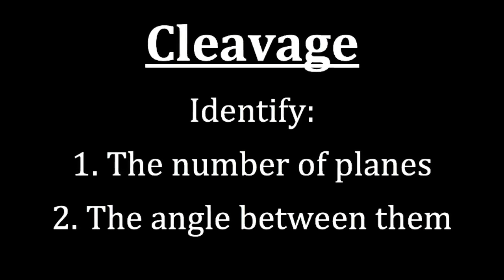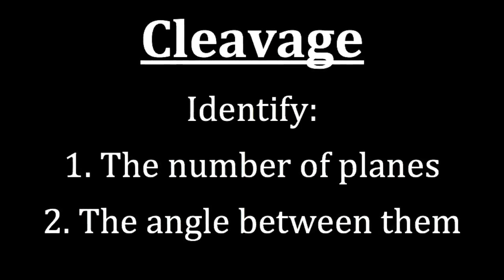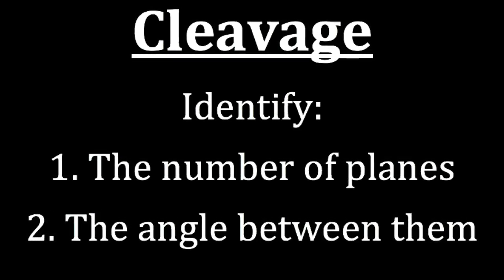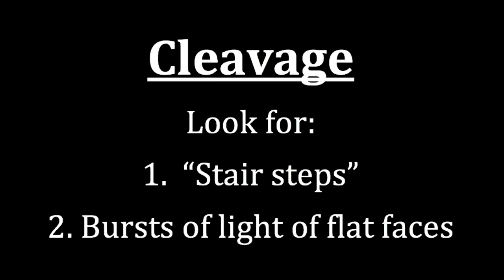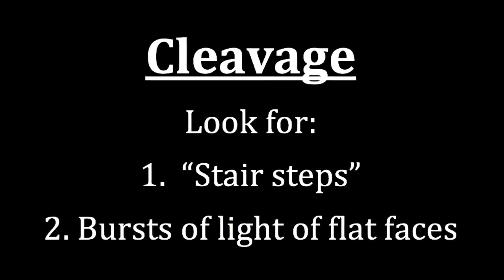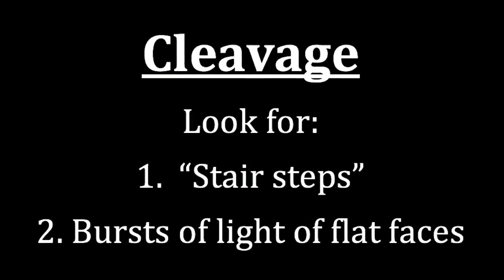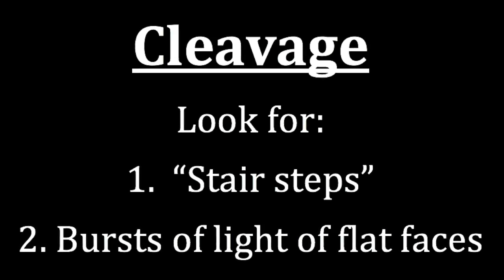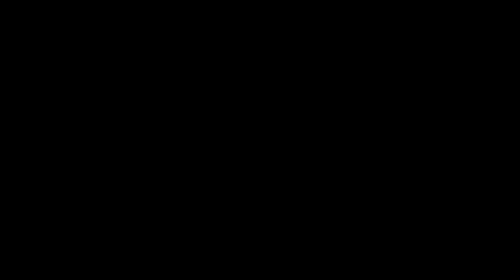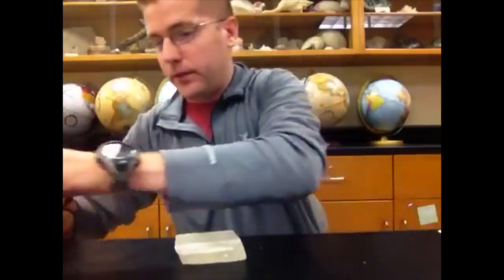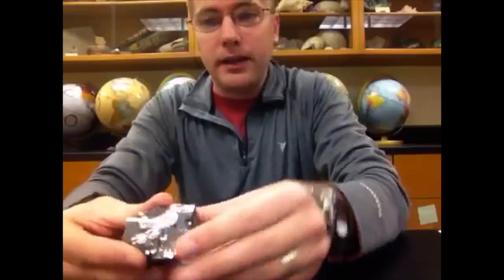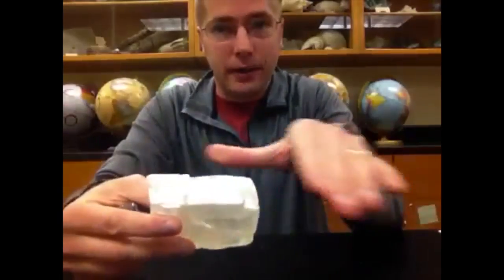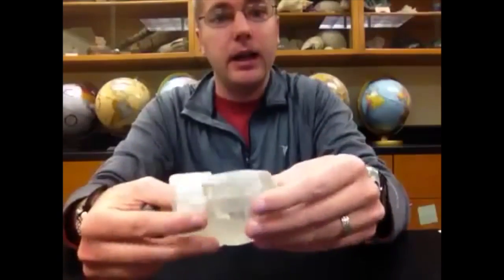What we're going to look for when we're identifying cleavage is two things: identifying the number of planes and the angle between them. To identify the number of planes, we look at a sample that has cleavage. The first thing to look for is called stair steps — they're not actual stair steps, but that's what they look like. The second thing we're going to look for are bursts of light off flat surfaces. So when I hold a sample up for you to see, we can see a burst of light, and we can also see it on this sample.